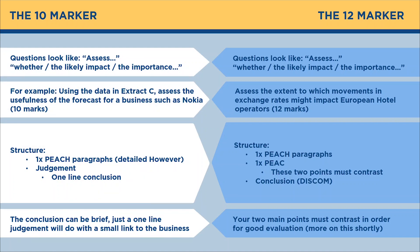The 10 markers are on the left-hand side, 12 markers on the right-hand side. The questions pretty much can look the same — they all begin with 'assess'. I've given some examples of the kind of prompt you'd get: assess whether, assess the likely impact, assess the importance. For the 10 marker, for example: 'Using the data in Extract C, assess the usefulness of the forecast for a business such as Nokia.' That has three parts — the prompt, the key term (the forecast), and the business (Nokia). For the 12 marker: 'Assess the extent to which movements in exchange rates might impact on European hotel operators.' As you can see, the prompts are the same — that word 'assess' is the same on both — so you've got to be careful about which one's the 10 and which one's the 12 marker in terms of structure, because the structure is different.